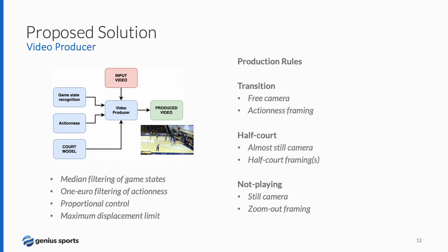Last but not least, the video producer combines information from game states, action function, and court model to perform the production. To ensure temporal consistency, a median filter is applied to the game states. To avoid high-frequency values, a one-euro filter is applied to the action function. There are three different production rules depending on the game state. During a transition, there is a free camera trying to be centered on the action value using proportional control, always obeying a maximum displacement limit. During a half-court state, we have an almost-still camera localized in one of the half-court defined frames. During a not-playing state, we have a totally still camera placing the zoom-out framing.